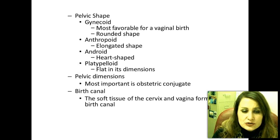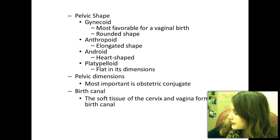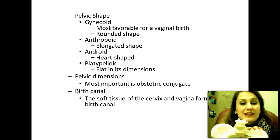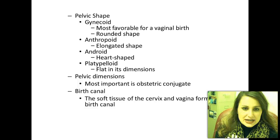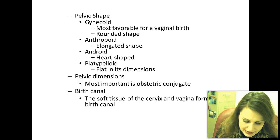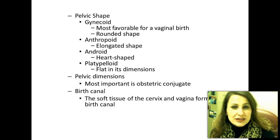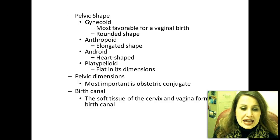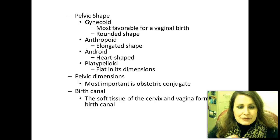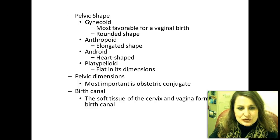Pelvic shape: gynecoid is the most favorable for a vaginal birth — it has a rounded shape that makes it easiest for the baby's head to come through. Anthropoid is an elongated shape, more like a man's pelvis. Android is the heart shape. Platypelloid is flat in dimensions, almost squished.